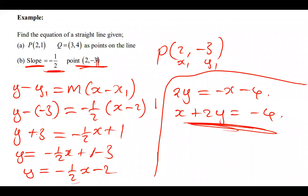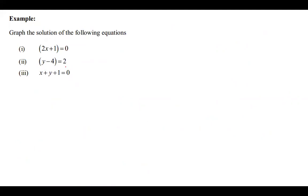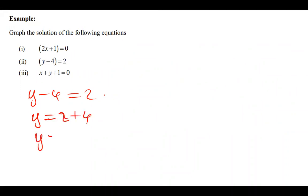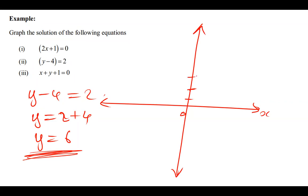For the question y - 4 = 2: make y the subject. y = 2 + 4 = 6. So y = 6. On the xy-plane, move six steps up the positive y-axis and draw a straight horizontal line. That is the equation y = 6.